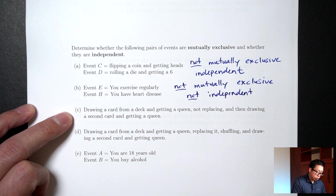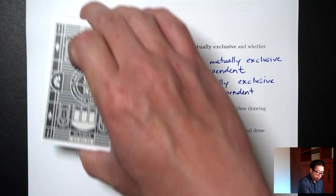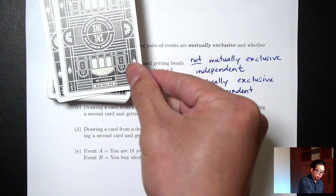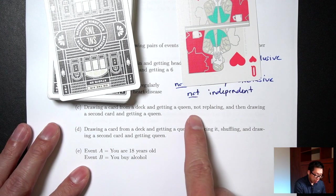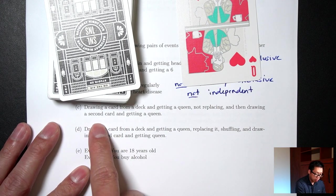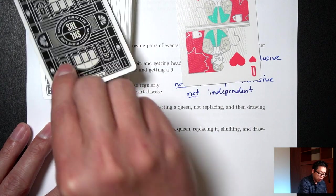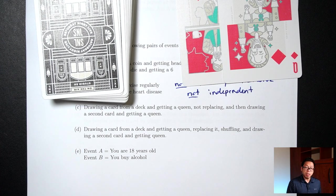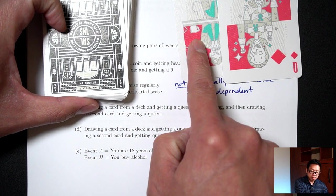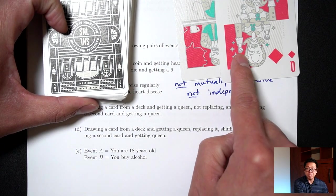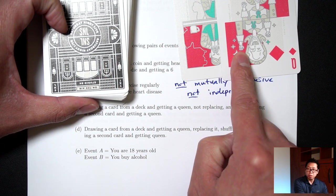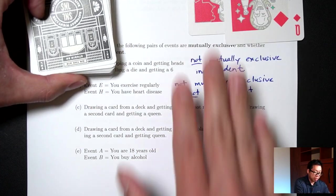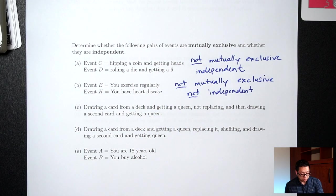Part C: Drawing a card from a deck and getting a queen, then not replacing it and drawing a second card and getting a queen. Are these two things mutually exclusive? Can you get a queen, not put the card back, draw a second card, and get a second queen? Yes, it just happened. Because it's a yes, this will be not mutually exclusive.